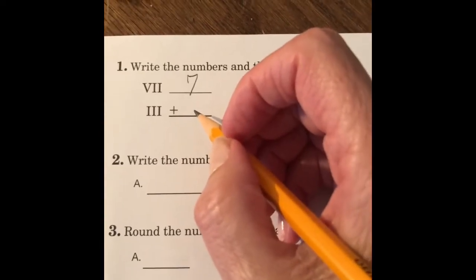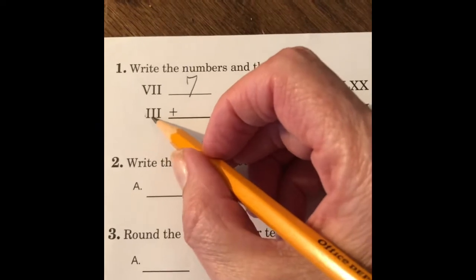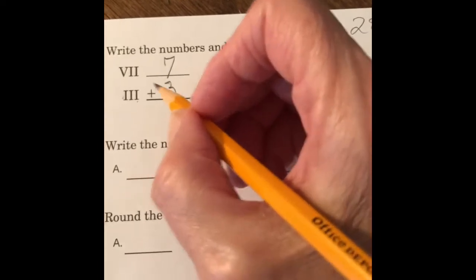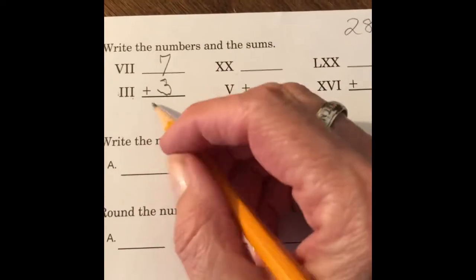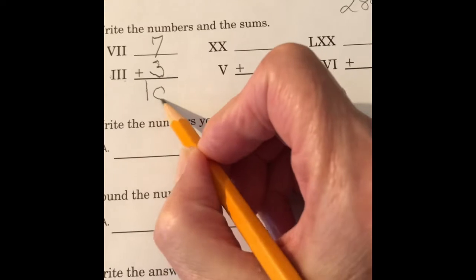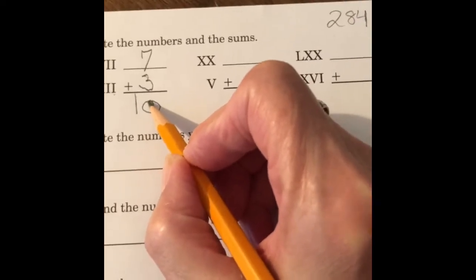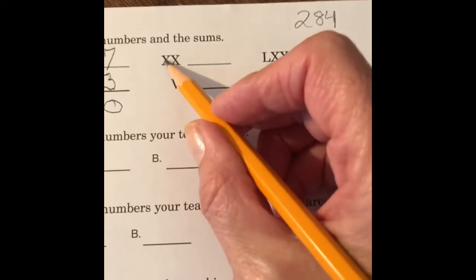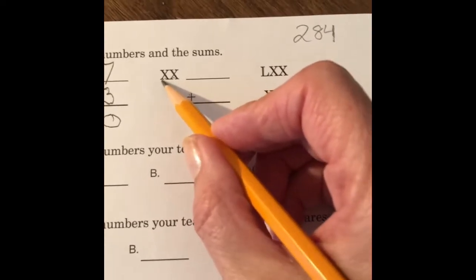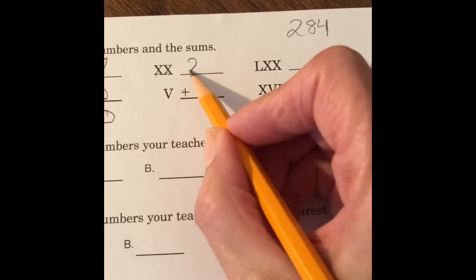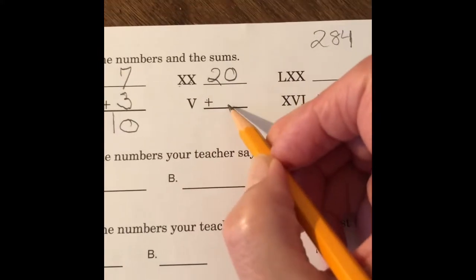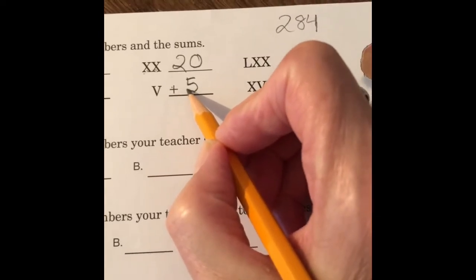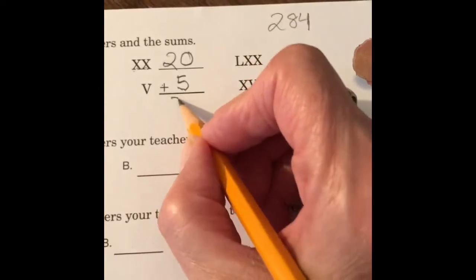Plus III. You know, 1, 2, 3. So it's 7 plus 3. What is 7 plus 3? It's 10. All right, let's go over here. XX. You know that one X is 10, and another X is 10. So 10 and 10 is 20. V is 5. 20 plus 5 is 25.